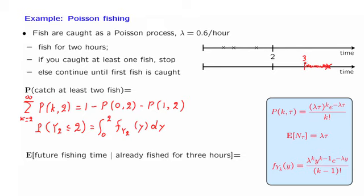The Poisson process starts fresh at time three. No matter what happened in the past, no matter what information we're given about the past, now at time three and looking into the future, you have a fresh starting Poisson process as if this were the initial time. The time until the first arrival has an exponential distribution with parameter lambda, and the expected value of this distribution is 1 over lambda.